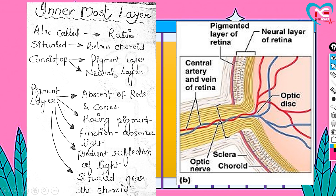So the pigmented and neural layer are two separate layers, and together they make the retina layer. Now, how are the pigmented and neural layers formed to make the retina layer?